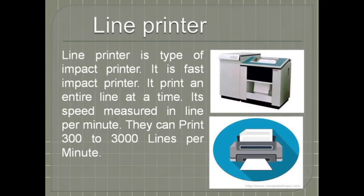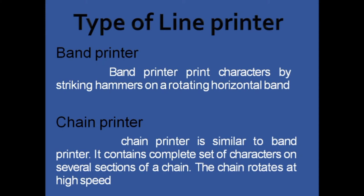The next type is the line printer, a fast impact printer that prints an entire line at a time. Its speed is measured in lines per minute — it can print 300 to 3000 lines per minute. The line printer can further be divided into band printer and chain printer. A band printer prints characters by striking a hammer on a rotating horizontal band, while a chain printer contains a complete set of characters on several sections of a chain that rotates at high speed.